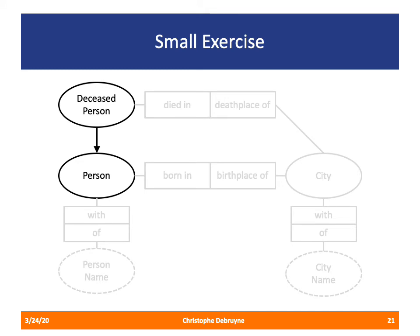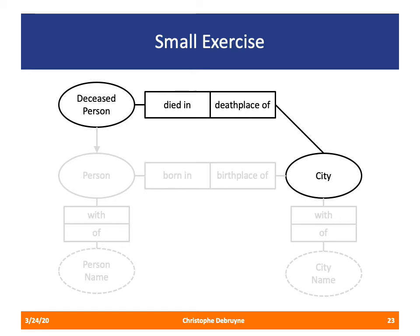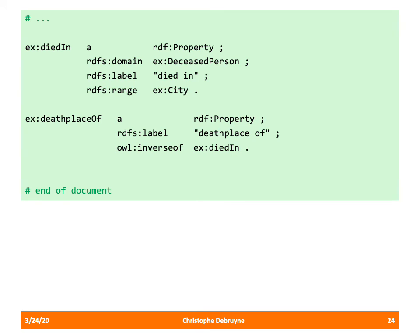Now let's implement the subclass relationship between deceased person and person — that's straightforward. We declare deceased_person as a subclass of person and provide an adequate label. Last, we implement the relation between deceased person and city using owl:inverseOf: we declare died_in and death_place_of, and state that death_place_of is the inverse of died_in. That completes our RDFS vocabulary.